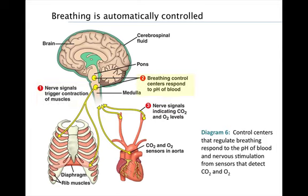The control center regulates the breathing rate in response to changes in carbon dioxide levels in the blood. When we exercise vigorously, our metabolism speeds up and our body cells generate more carbon dioxide as a waste product. The carbon dioxide goes into the blood where it reacts with water to form carbonic acid. The acid slightly lowers the pH of the blood and the cerebrospinal fluid. When the medulla senses this pH drop, its breathing control center increases the breathing rate and depth. As a result, more carbon dioxide is eliminated in the exhaled air and the pH returns to normal.